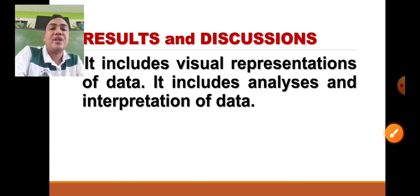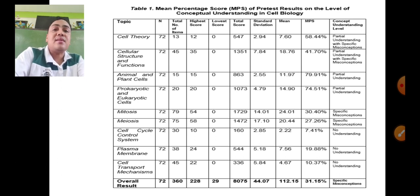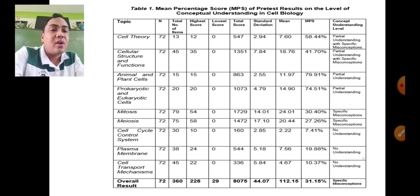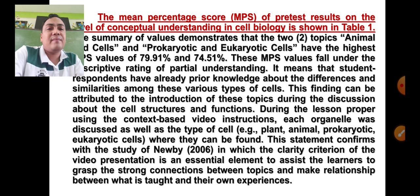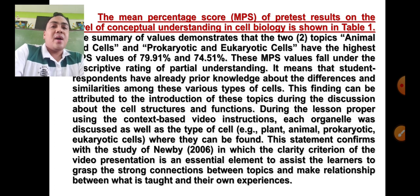For objective one of this action research, the result under results and discussion shows the mean percentage score of the pretest on the level of conceptual understanding in cell biology. Based on the result, the overall MPS is 31.15%, corresponding to the descriptive rating of specific misconception — meaning students have specific misconceptions or lack background knowledge in cell biology. In writing results and discussion, the mean percentage score of the pretest is shown in table one.